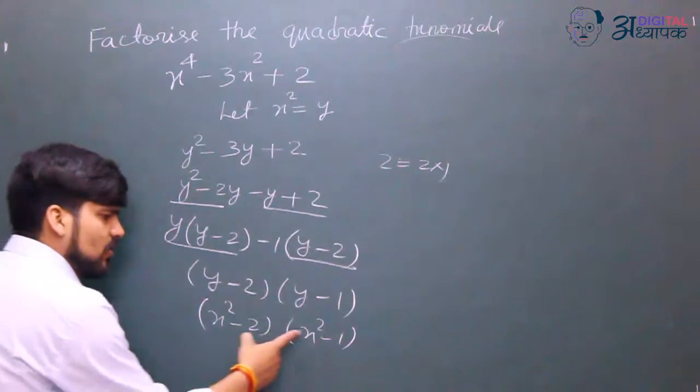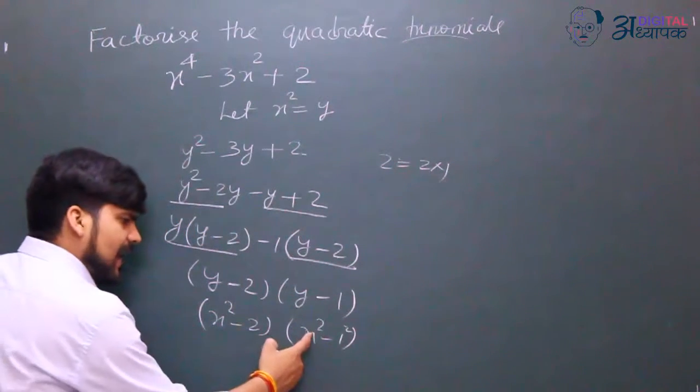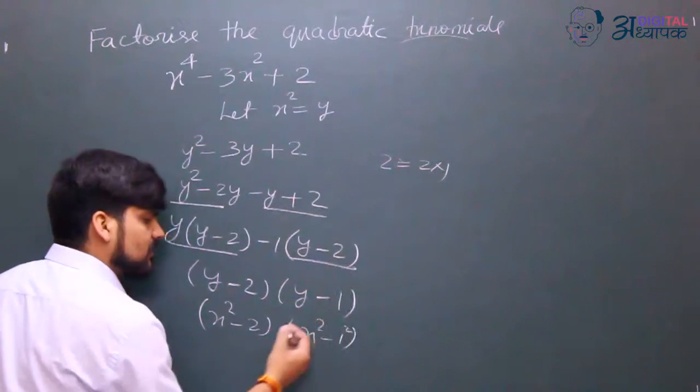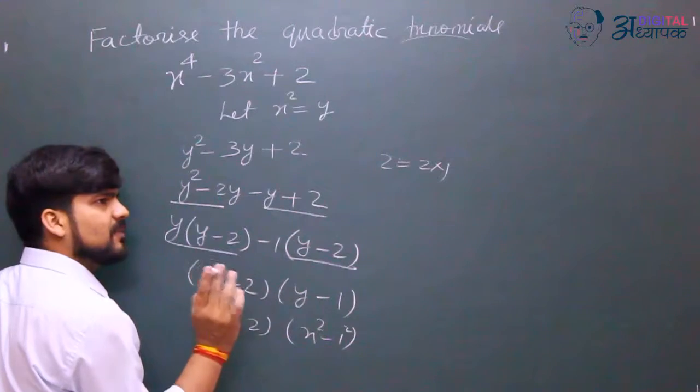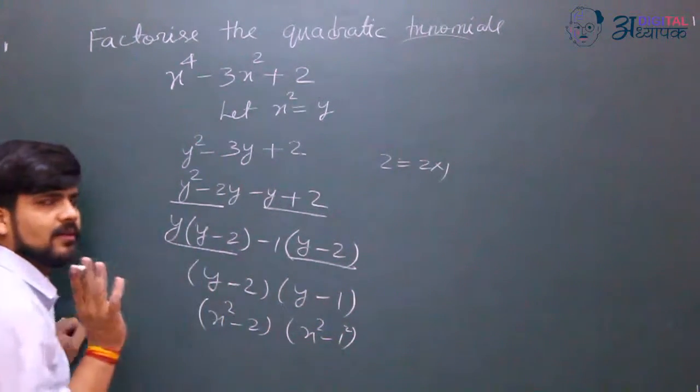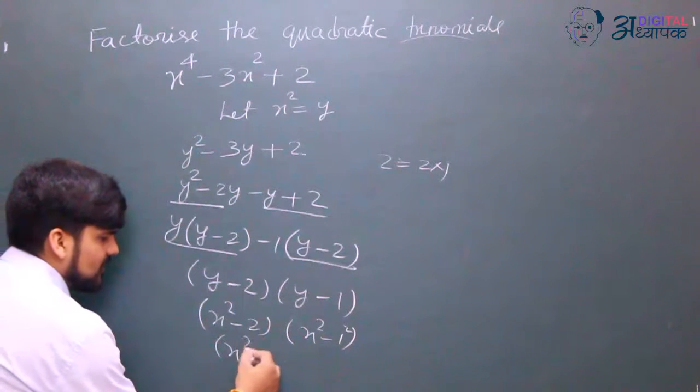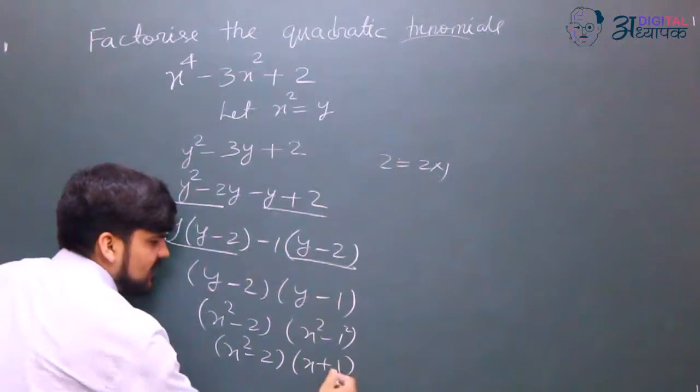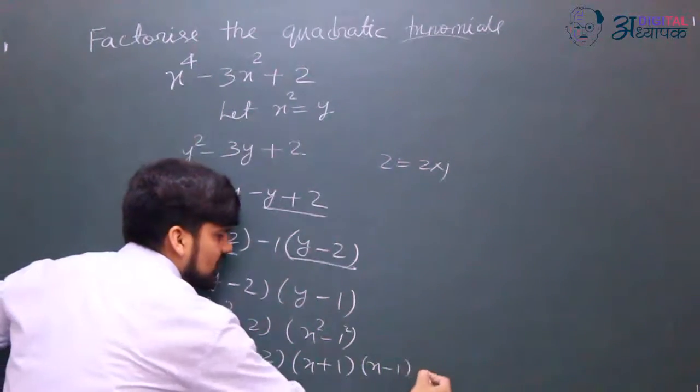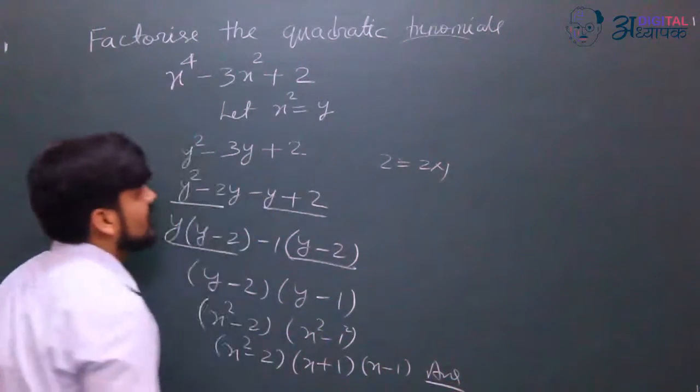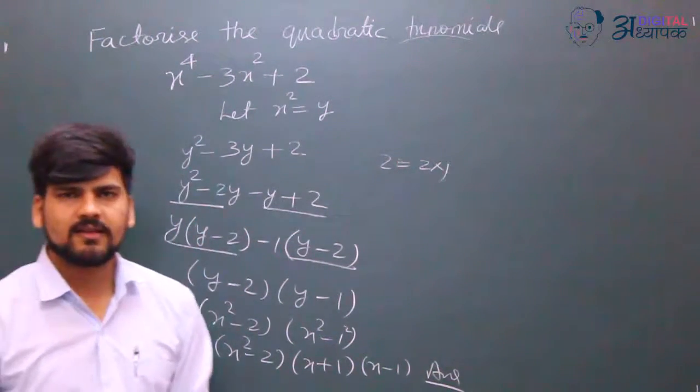This is simplified. x^2 - 1 is like a^2 - b^2, which factors as (a + b)(a - b). So we have (x^2 - 2), and another bracket (x + 1)(x - 1), which is the required factor of the given polynomial. Thank you class.